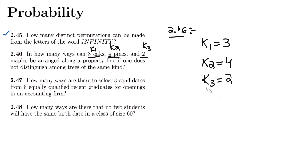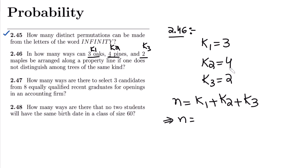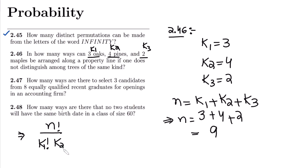We now have the values of the k's but need to find n. Applying the multinomial law, n equals k1 plus k2 plus k3, which is 3 plus 4 plus 2, giving us n equals 9. The multinomial law formula gives us n factorial divided by k1 factorial times k2 factorial times k3 factorial, which is 9 factorial divided by 3 factorial times 4 factorial times 2 factorial.